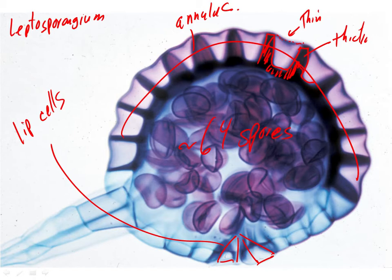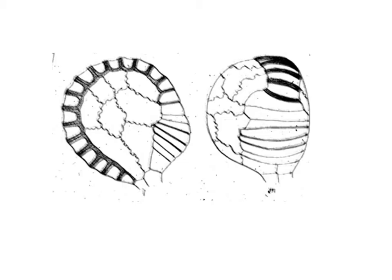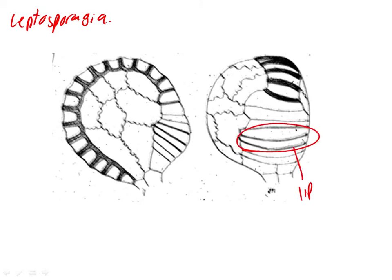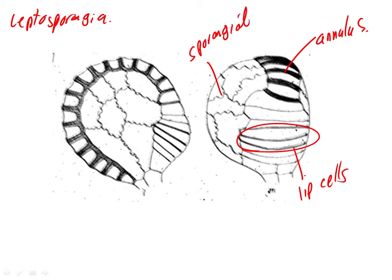These annulus cells are also dead at maturity. When the sporangia are mature and the spores are going to be shed, those cells of the annulus are dead and filled with water. Here's the leptosporangium again from a different view so you can see it's a little fat. You can also see the lip cells — they really do look like lips. The annulus and the sporangial wall is only one cell thick.